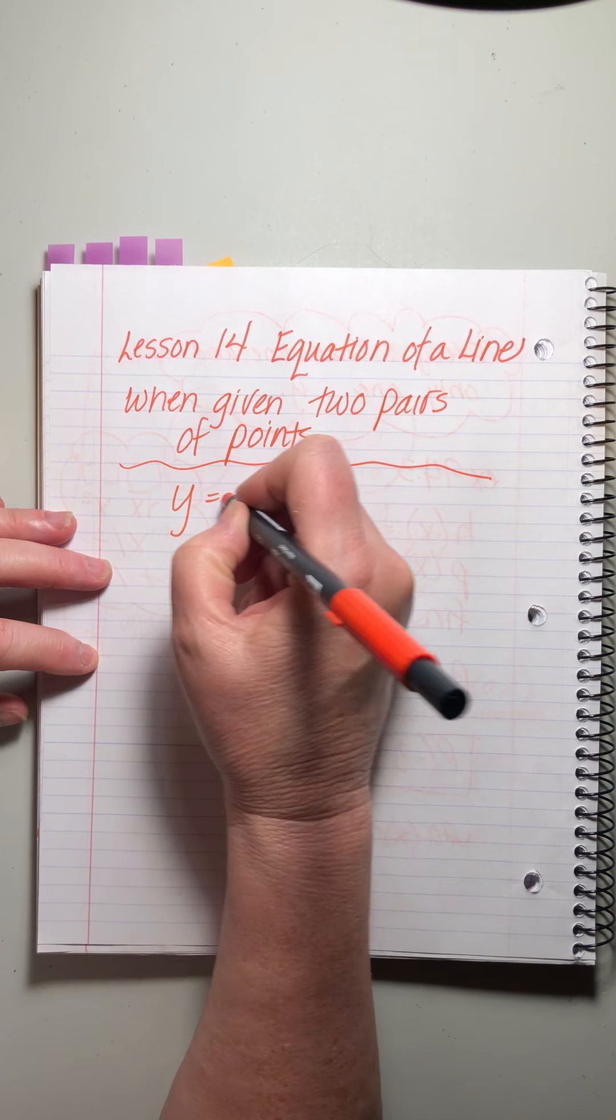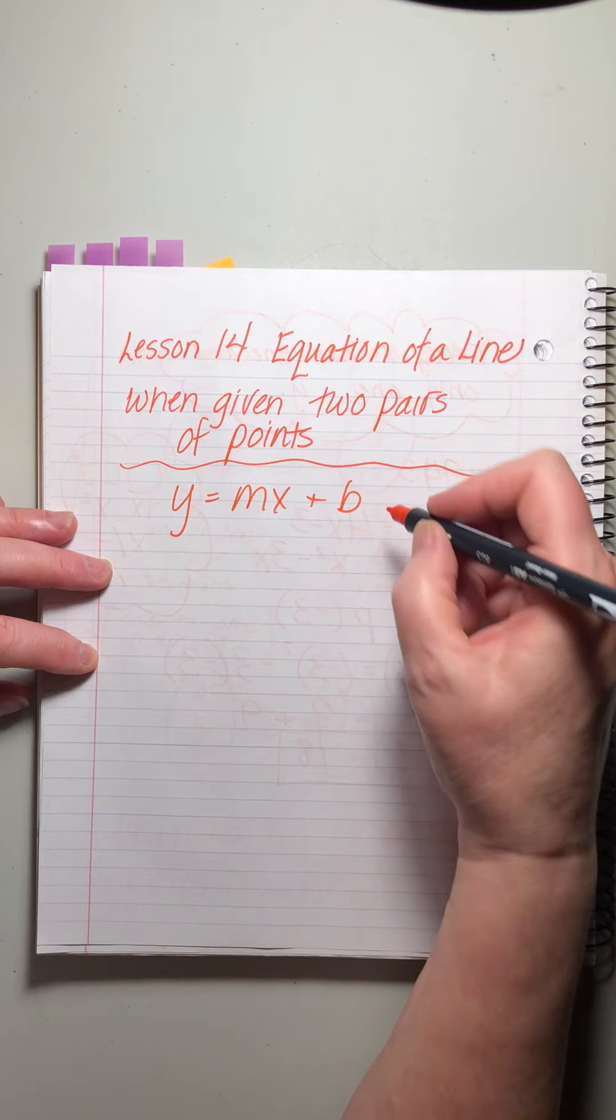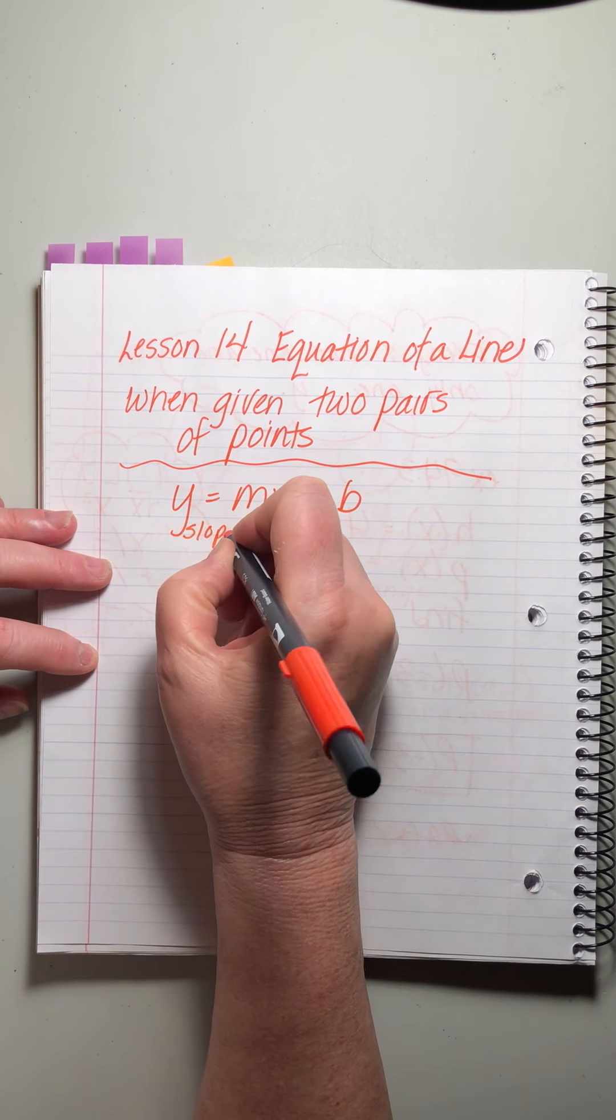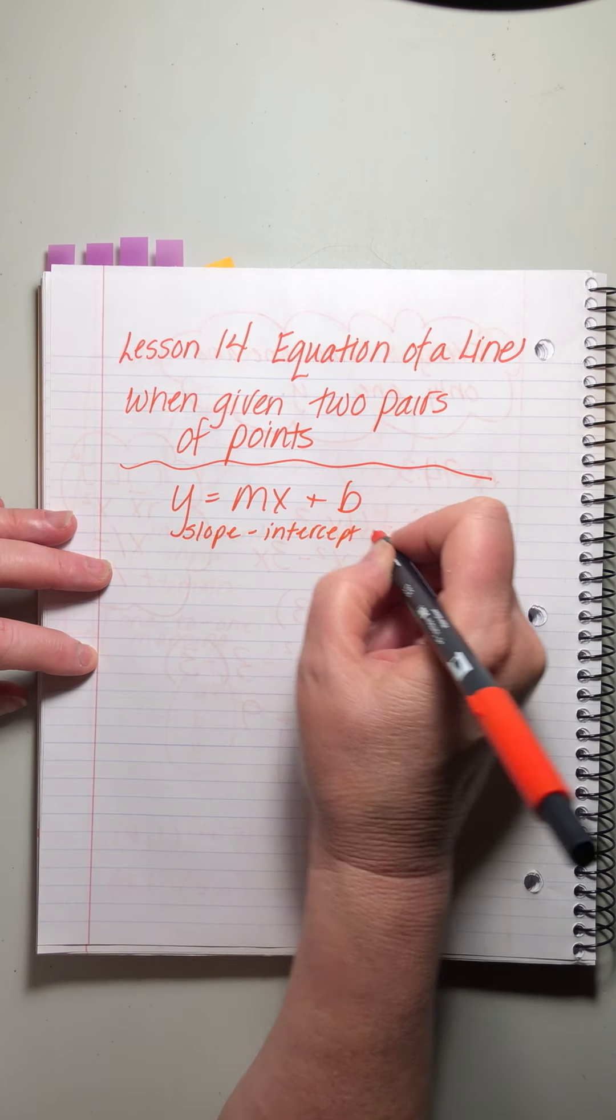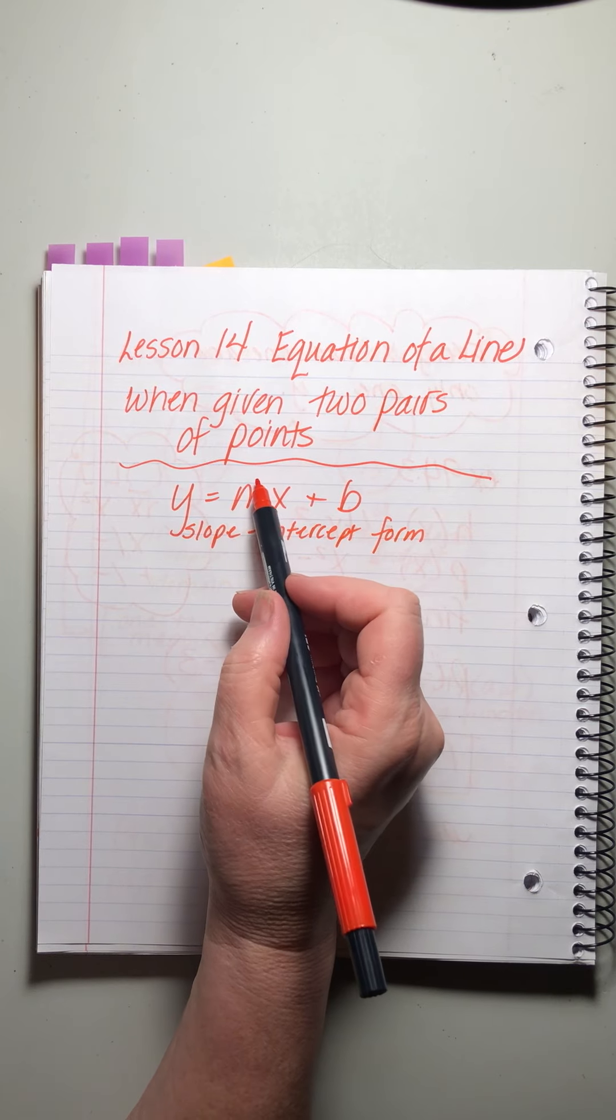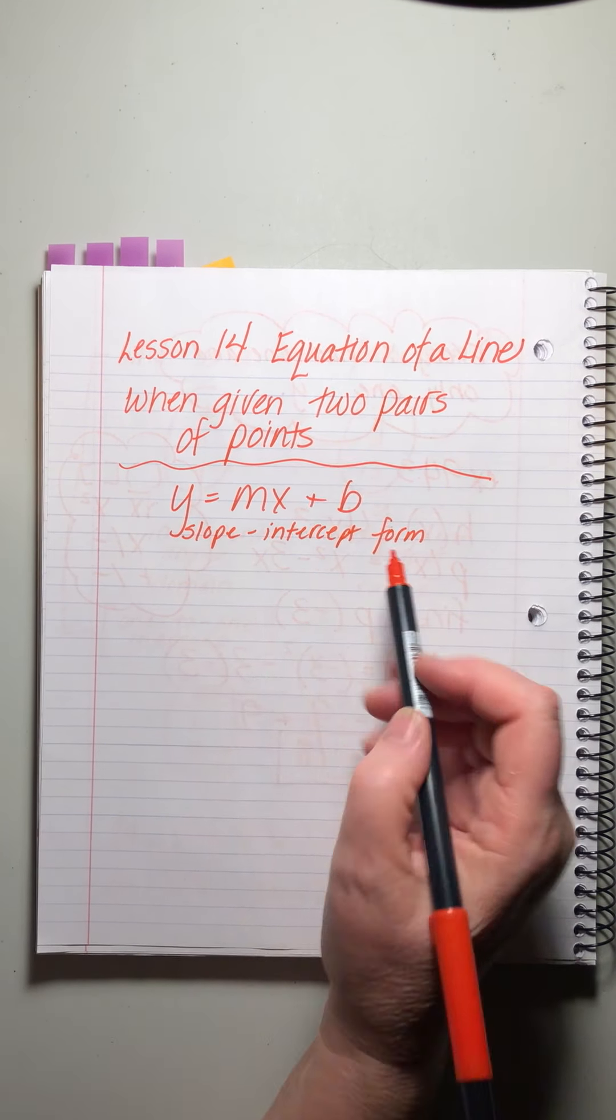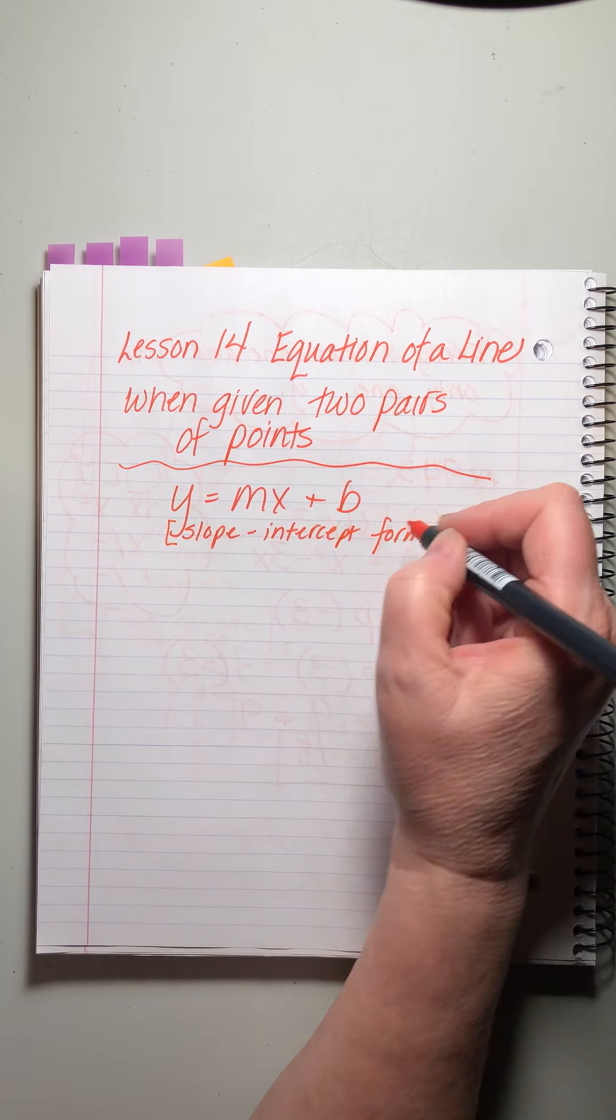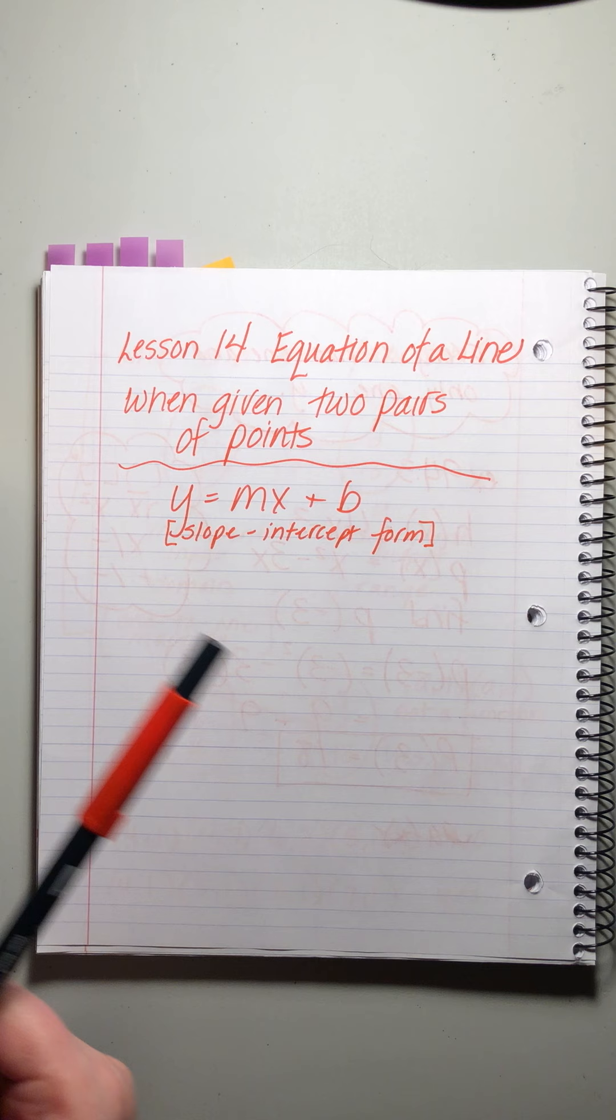We want to end up with this, right? Remember, this is the equation of a line in what we like to call slope-intercept form, because we know that M gives us a slope, and B gives us the intercept. So that's why it's called slope-intercept form. So clever, right? These mathematicians, they get up early in the morning to come up with this stuff, you guys. It's just crazy cool.